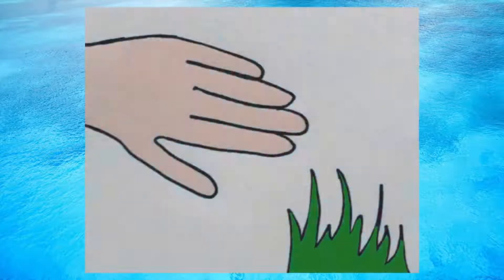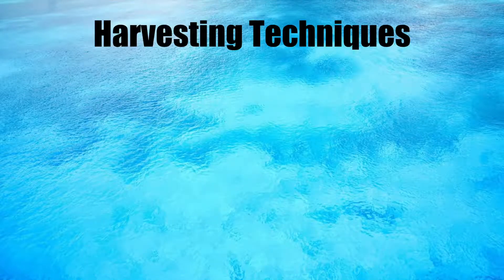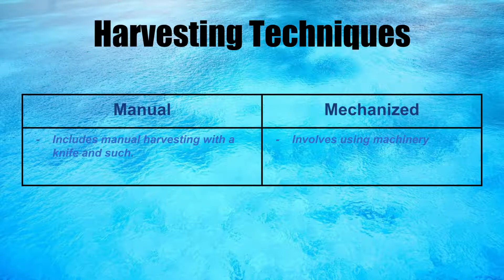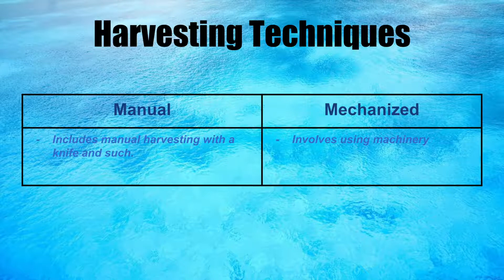Step 7: Eliminate weeds. Step 8: Harvest often. The two main types of harvesting techniques are manual and mechanized. Manual involves manually harvesting with a knife or such, and mechanized involves using machinery.